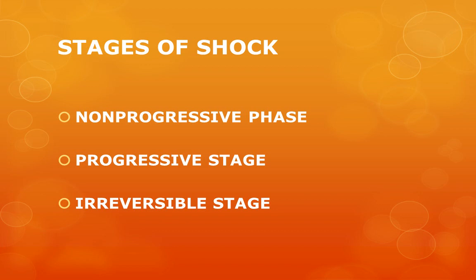Apart from the stages of shock, there are various morphological changes seen in organs. In the kidney, an important change is tubular necrosis. In the lungs, there occurs alveolar damage, and in the adrenal gland, intra-alveolar hemorrhages occur. These will be studied in detail in systemic pathology in fourth year. The next slide will show how to evaluate a patient clinically for shock—the signs and symptoms.